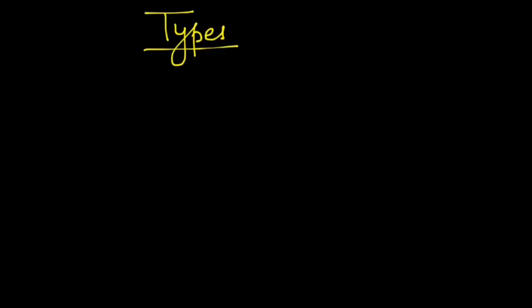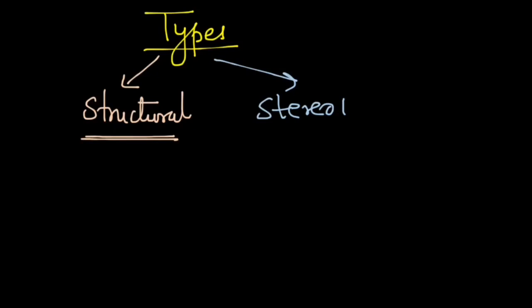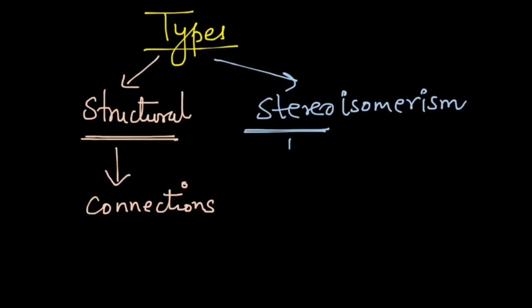Now let us look at the types of isomers. In organic chemistry you will encounter two different types of isomerisms. One is called structural isomerism where the connections between atoms are different, and the second kind is stereoisomerism where the connections are same but the orientations are different. Structural isomerism is related to the connections between atoms. Stereoisomerism is related to the orientation in space or the arrangement in space of atoms.